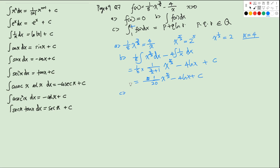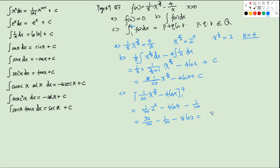For part C, we evaluate the definite integral from 1 to 4. Substituting x = 4, noting 4 = 2², so 4^(5/2) = 32: we get (32/20) − 4ln4. At x = 1 the terms give 1/20 and 0. So the result is 32/20 − 1/20 − 8ln2, which equals 31/20 − 8ln2. This can be written as p + q·ln r with p = 31/20, q = −8, r = 2.